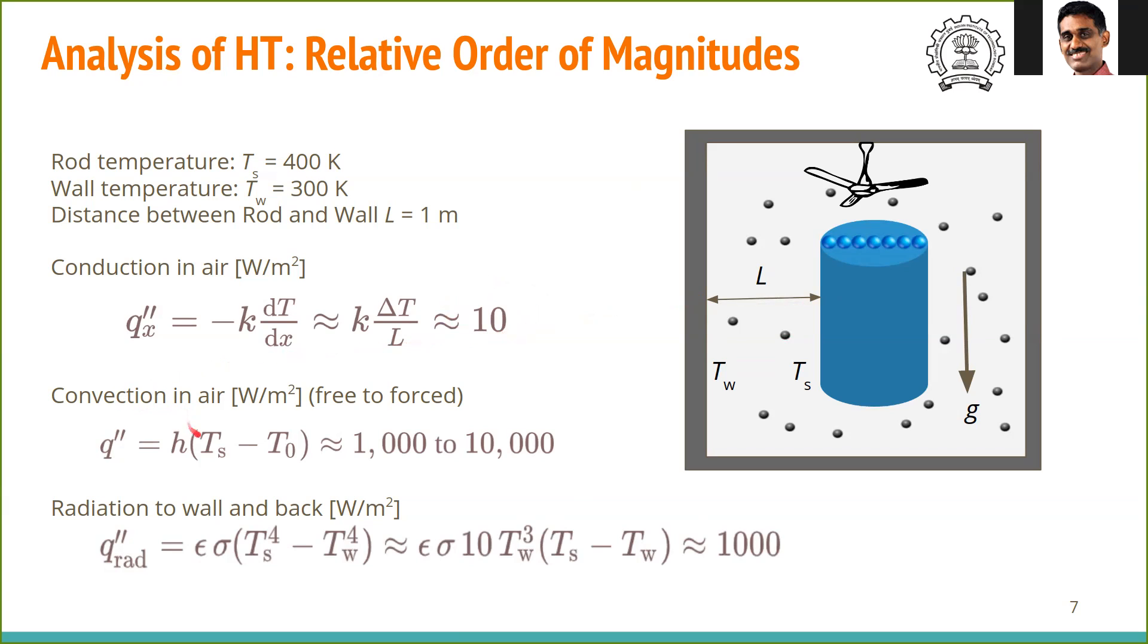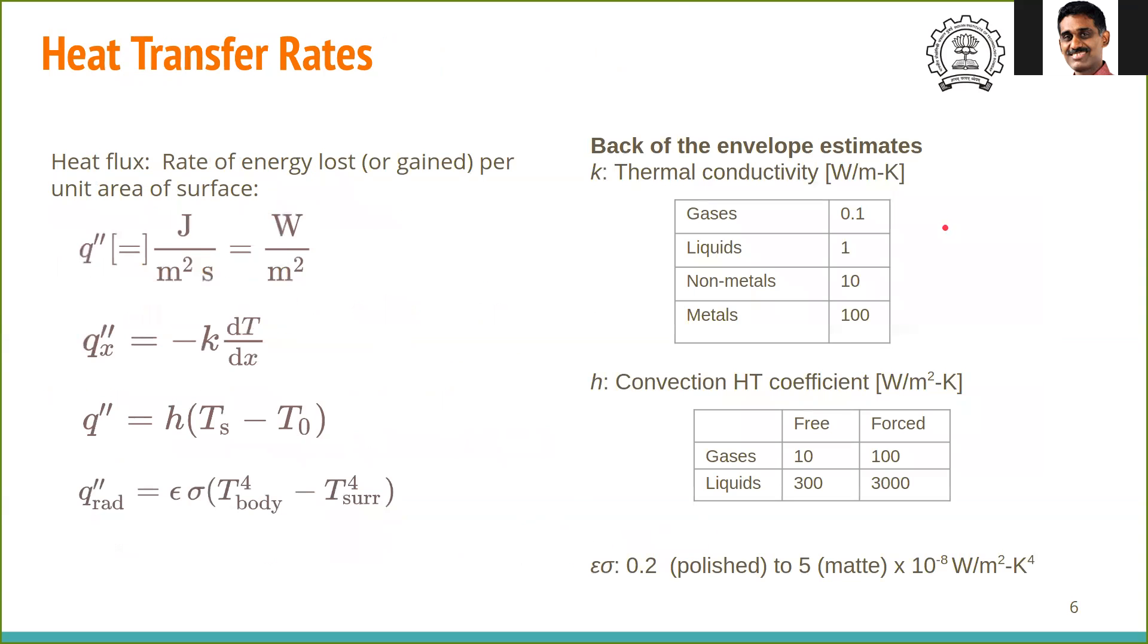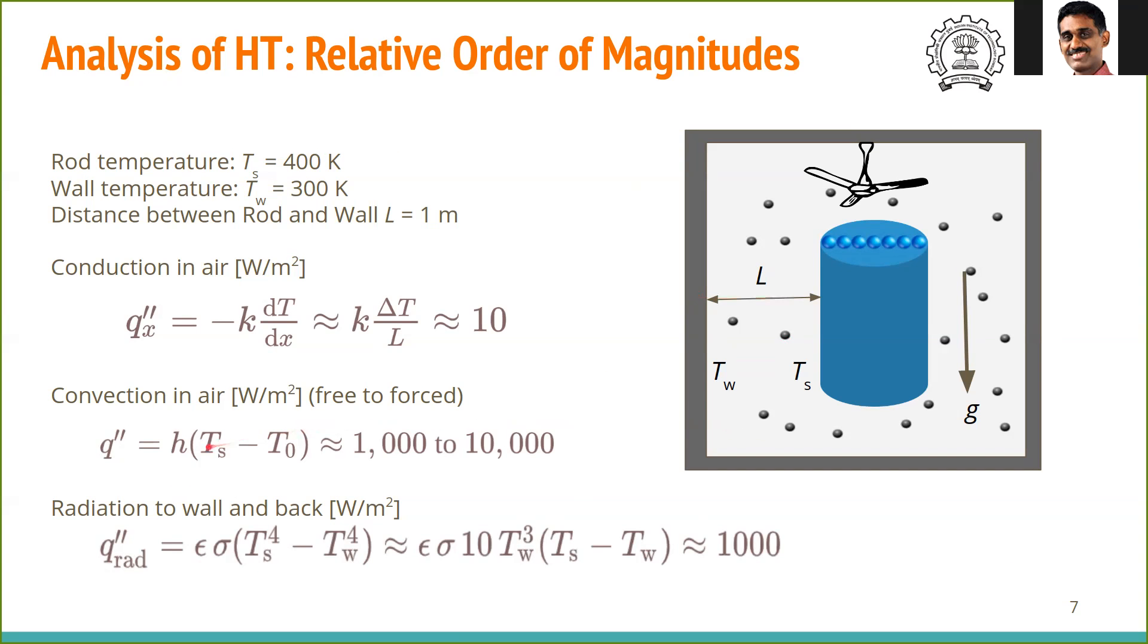Let's look at convection. Convective heat transfer coefficient for air in forced convection or free convection. If it is free convection, it is 10, forced convection it is 100 for gases. If you plug it in here and you have a temperature difference of 100, the q double prime convection goes from 1000 to 10,000.